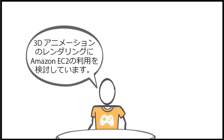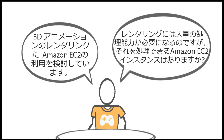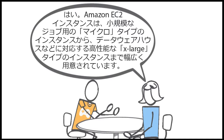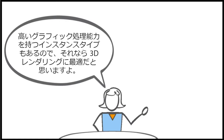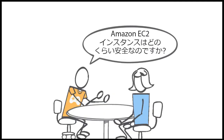I'm thinking about using Amazon EC2 for rendering my 3D animation. I'm going to need a lot of computing power for the rendering. Are there Amazon EC2 instances that can handle that? Absolutely. Amazon EC2 instances range from small micro-instances for small jobs to high-performance extra-large instances for things like data warehousing. You can mix and match different instance types based on the amount of memory or compute power needed. There are even instance types with high graphic processing capabilities, which would probably be perfect for your 3D rendering.